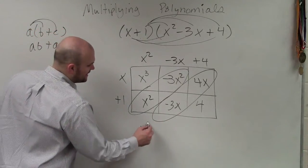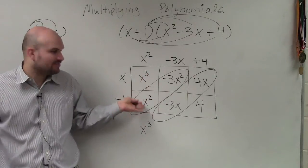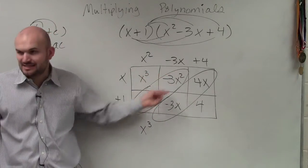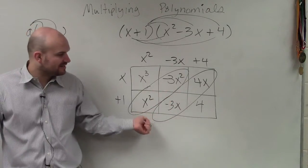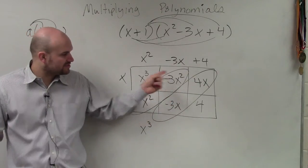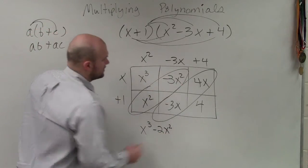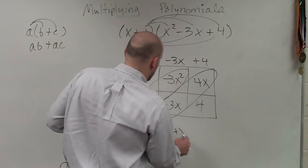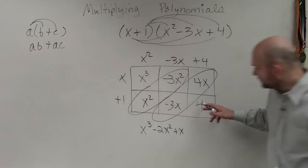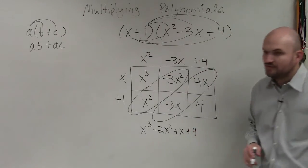So now, when I'm trying to find my answer, I have x³. I could write out negative 3x² plus x², but I can combine. I see that these both are x² terms, so they're like terms, so that means I can combine them. So negative 3x² plus x² is going to be negative 2x². Negative 3x plus 4x is just going to be a positive x. And then I have nothing to add to my 4, so it becomes a positive 4.